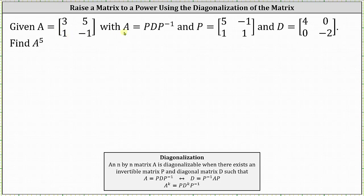We're given matrix A, where A equals matrix P times matrix D times the inverse of matrix P. We're also given matrix P and matrix D, and we want to find A to the fifth. Because A is equal to P times D times P inverse, we know matrix A is diagonalizable and can be written in the form P times D times P inverse.